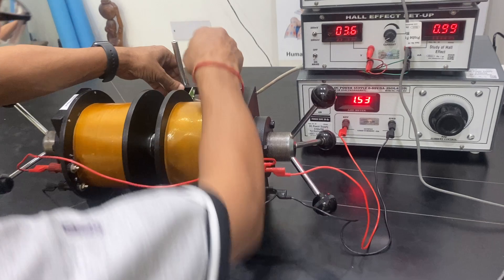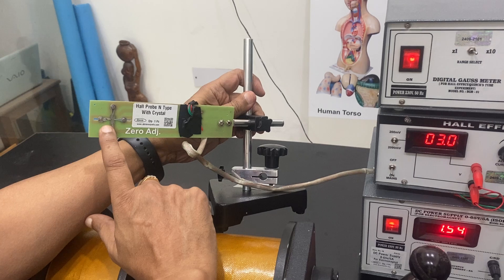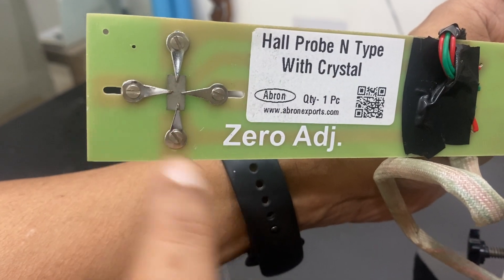Now we have to do a connection for the hall probe. This one is a hall probe. P type hall probe, N type, which has a crystal here. You can see the crystal is mounted here. It has four terminals.